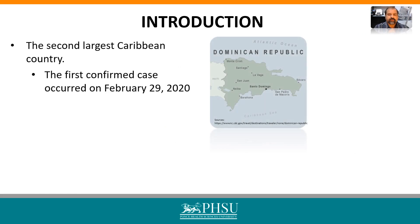The Dominican Republic is the second largest Caribbean country. There have been half a million infections and around 4,000 coronavirus-related deaths reported in the country since the pandemic began. Like other countries, once the first cases of SARS-CoV-2 were detected, the government established a strict lockdown due to the absence of vaccines and effective pharmaceutical treatment.